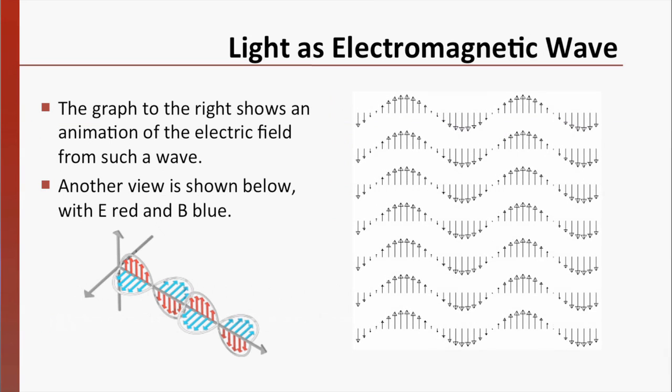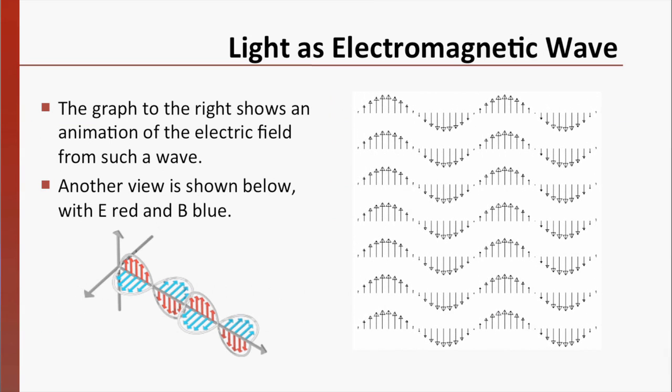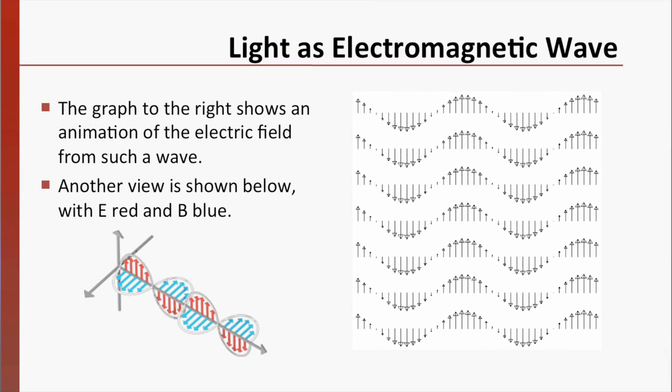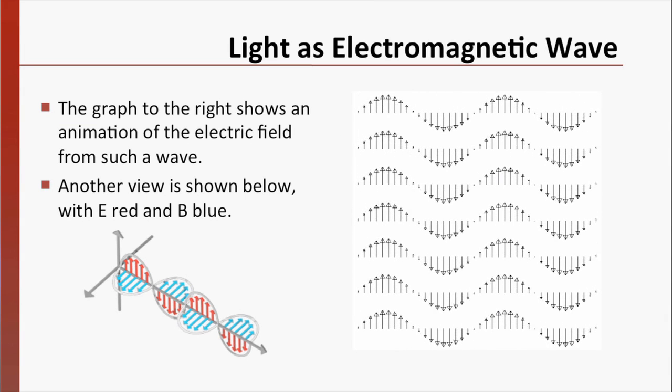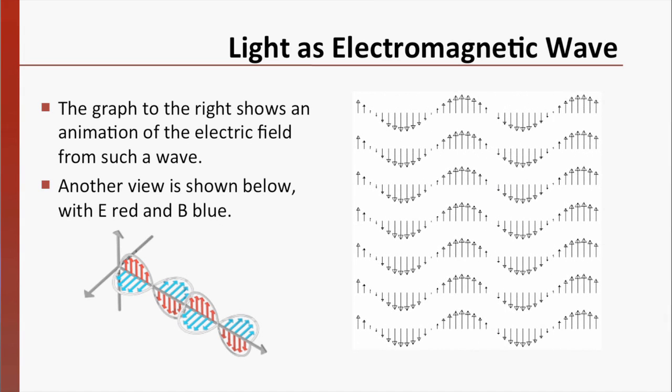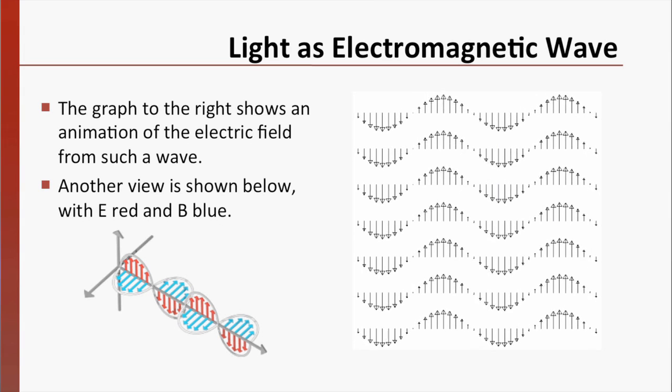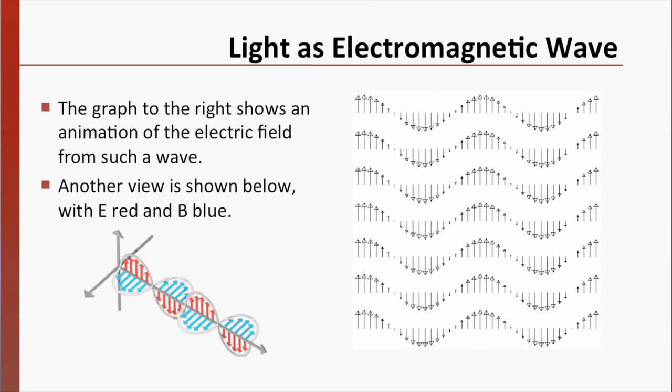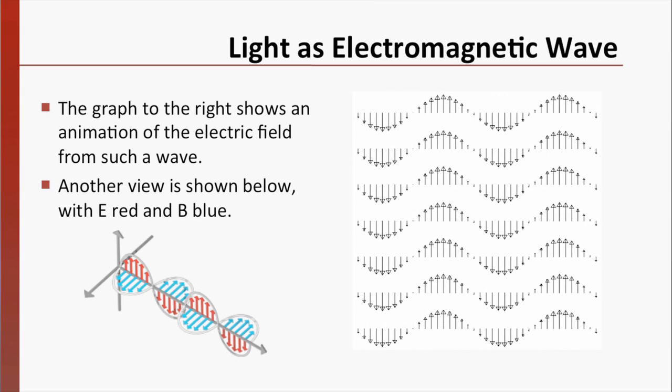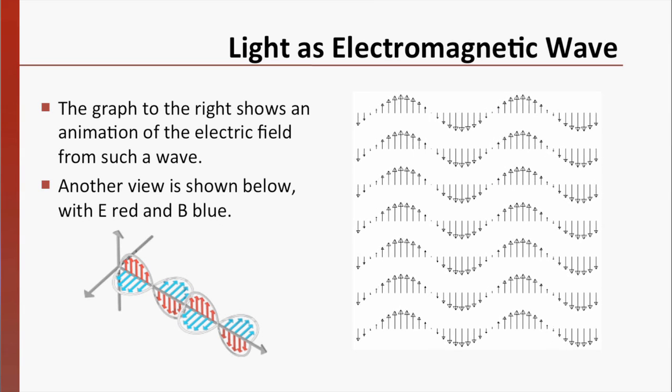As you probably know, this is a common model for light. We imagine a situation similar to the animation shown to the right, where electromagnetic waves propagate in the direction that the light is shining. This animation shows the electric field vectors as the wave moves to the right. Below is another image that shows the electric field in red and the magnetic field in blue, perpendicular to each other.